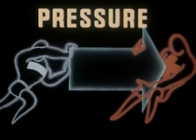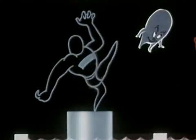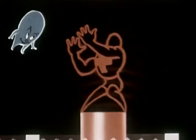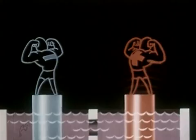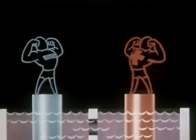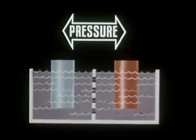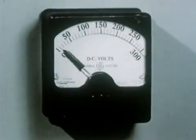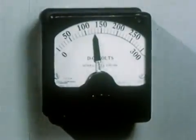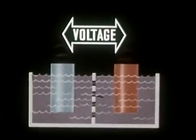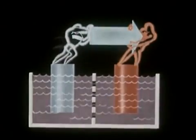First, let us consider pressure. With nature always trying to maintain an electrical balance, there is a tendency for any negatively charged object to throw off or repel its excess of electrons, and for a positively charged object to attract electrons. This urge to maintain an electrical balance is potential electric energy. And since this potential energy is a repelling and attracting urge caused by opposite charges, its force or pressure is equal to the difference in the charges. It is called the difference in potential, or potential difference. The unit of pressure or potential difference is the volt.